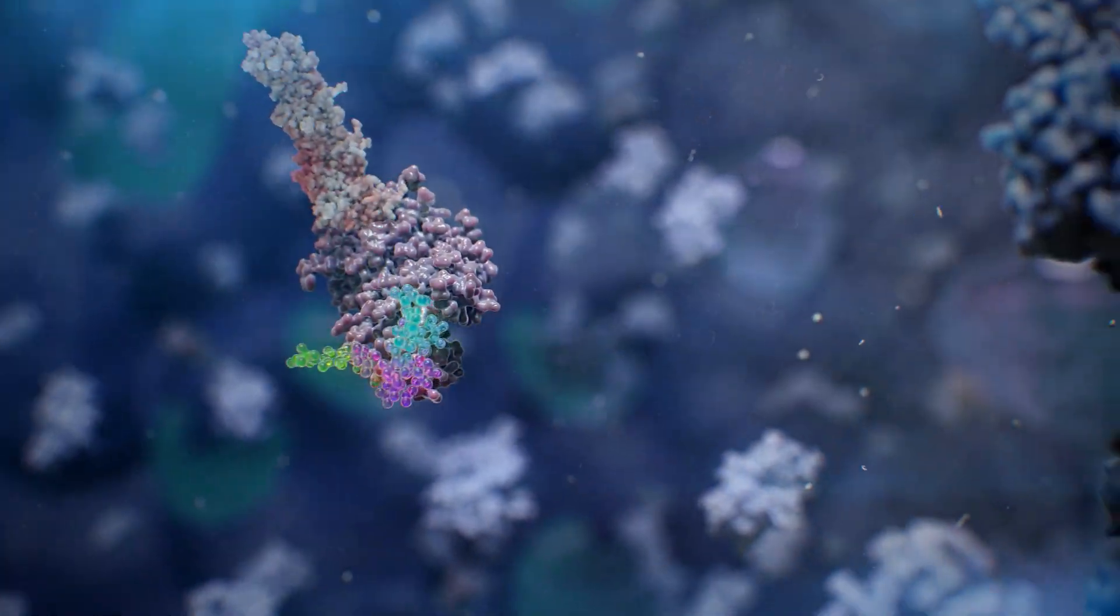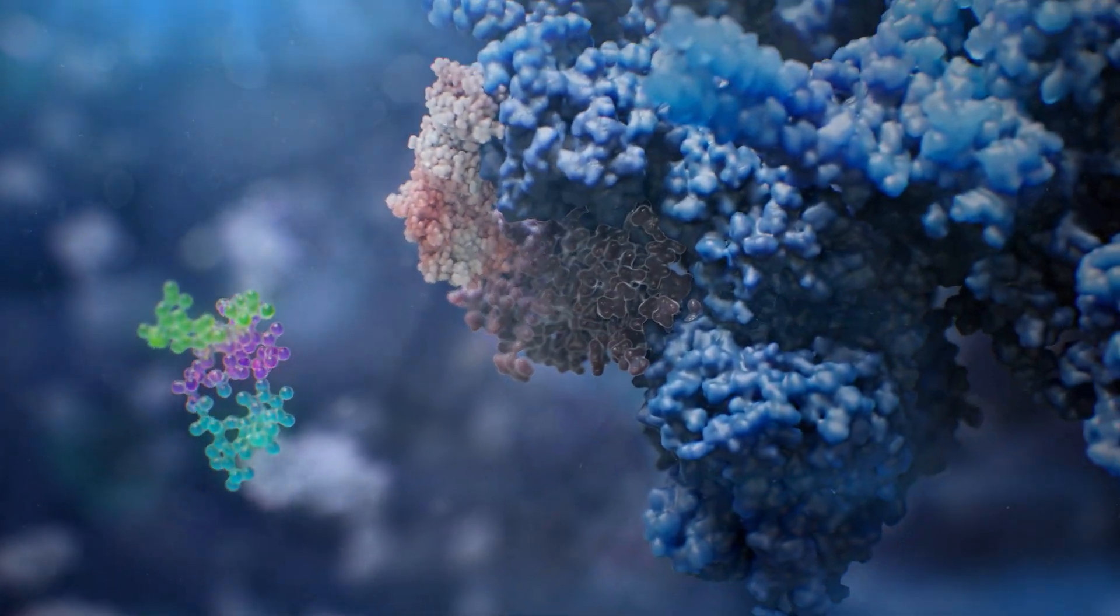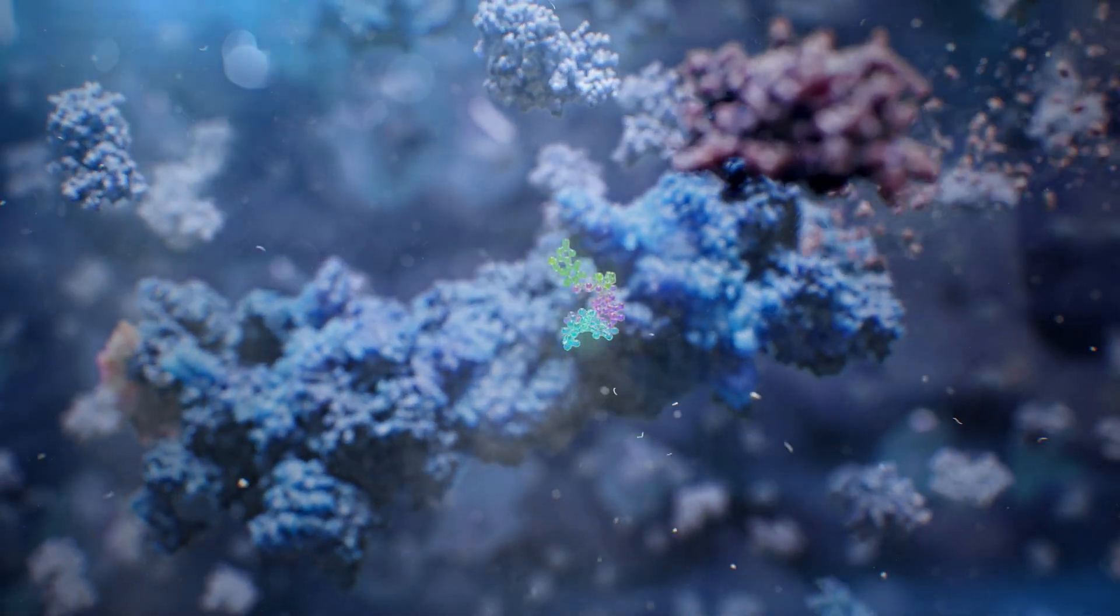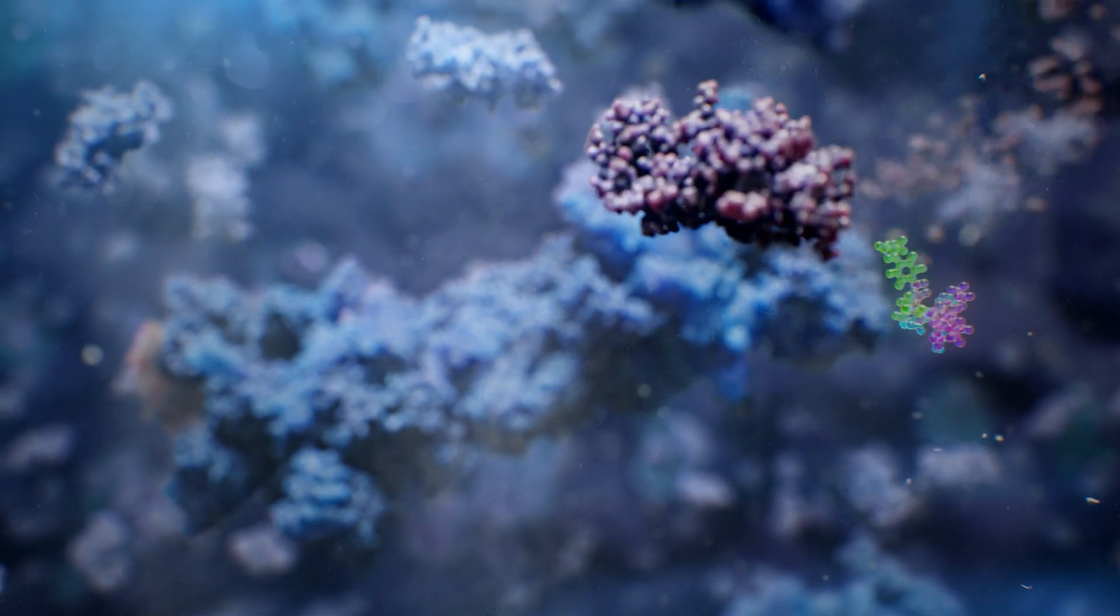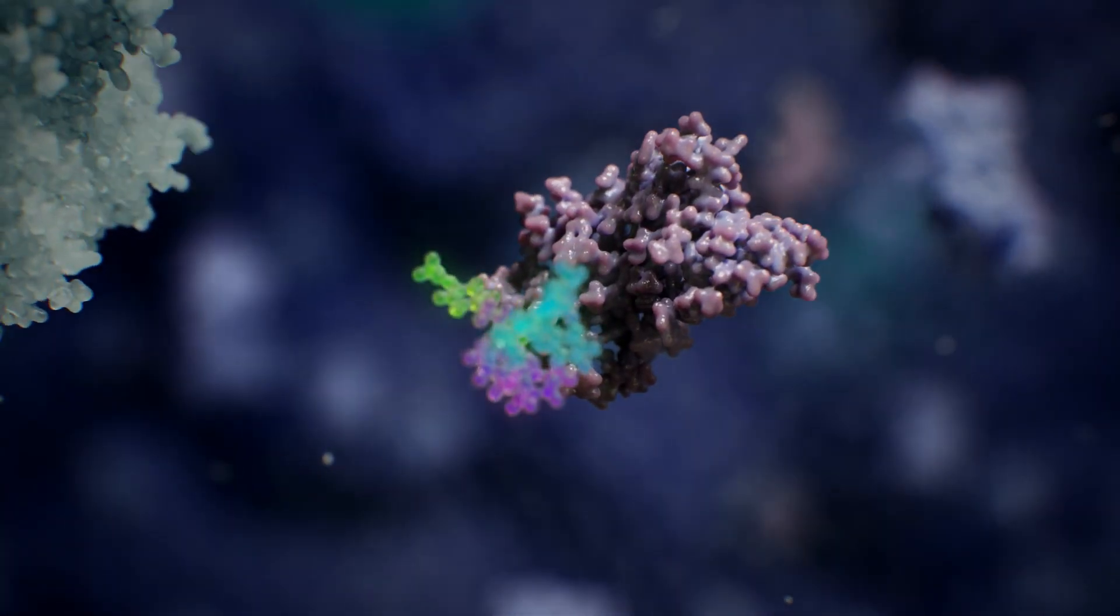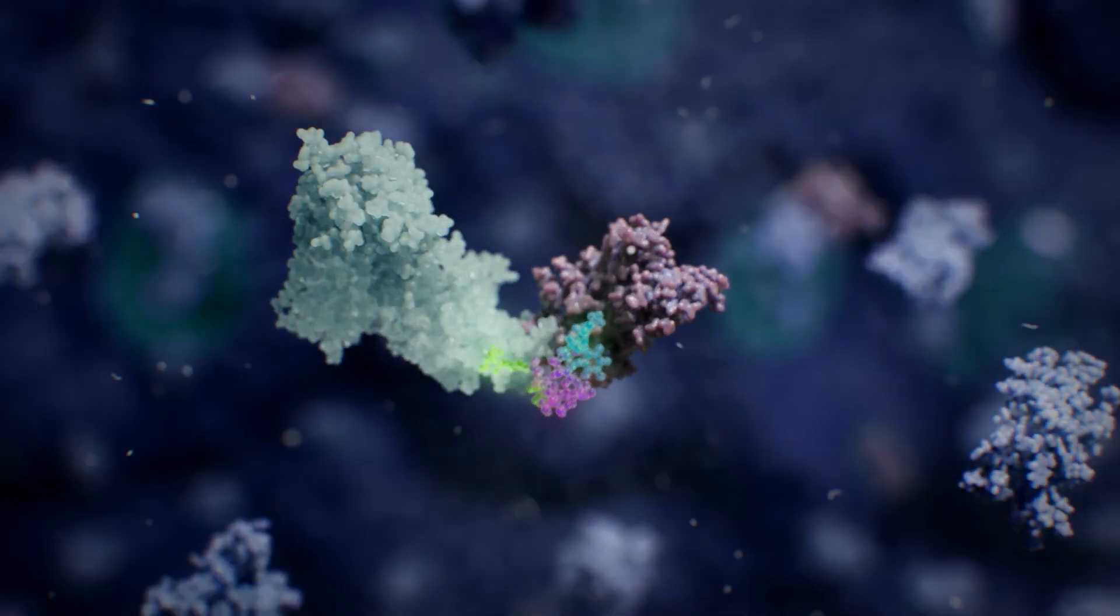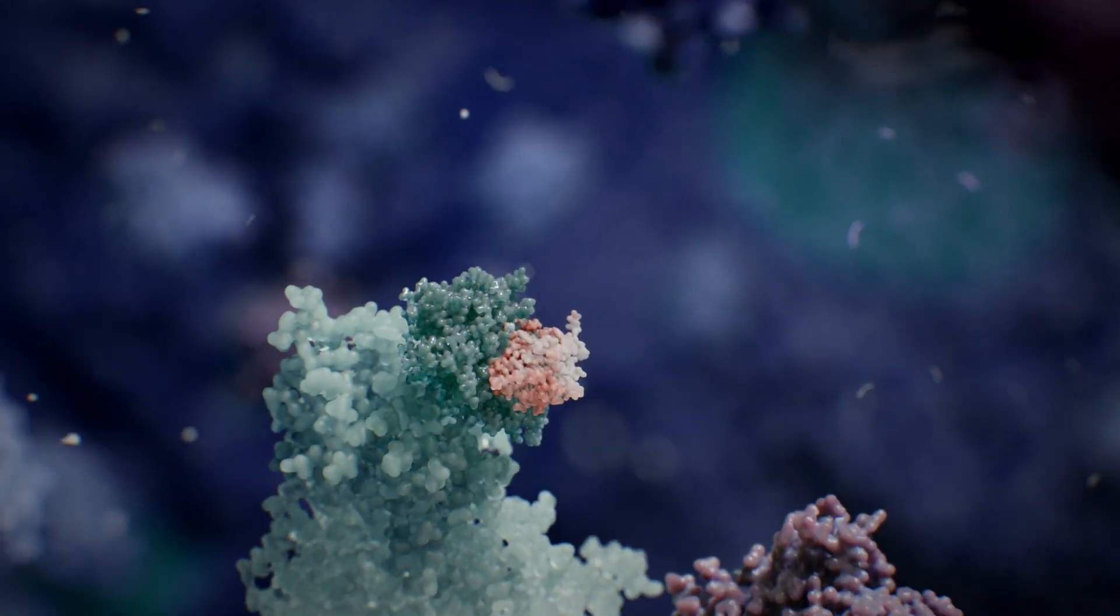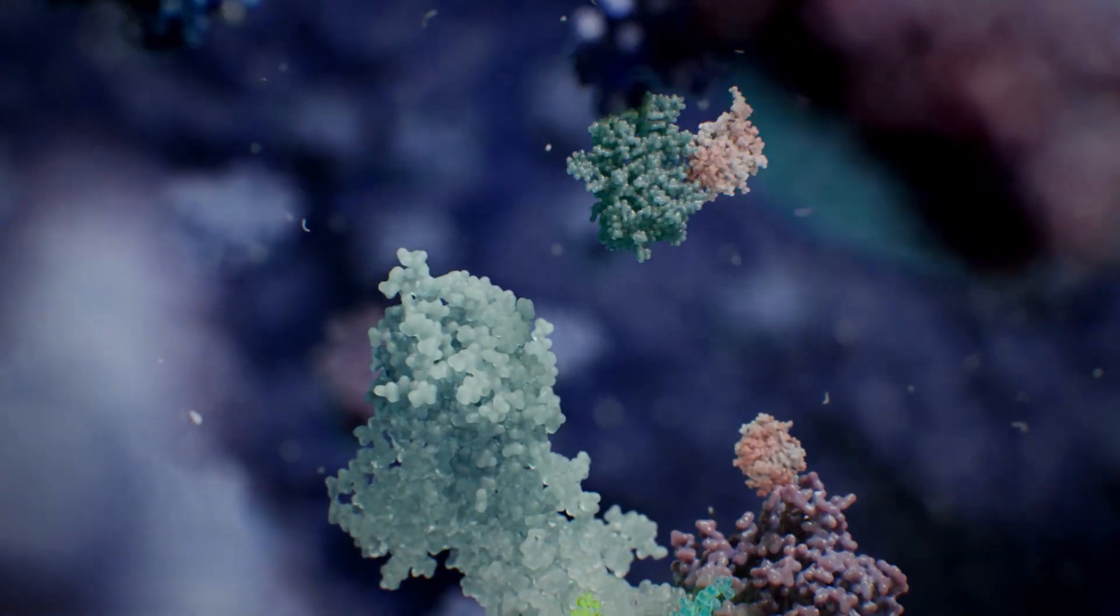Once marked, the disease-causing protein is directed to another part of the UPS that breaks down the proteins. One of the reasons Arvinas's Protac molecules are such effective protein degraders is because the degraders themselves are not broken down in this process. So each Protac has the potential to perform this task hundreds of times.